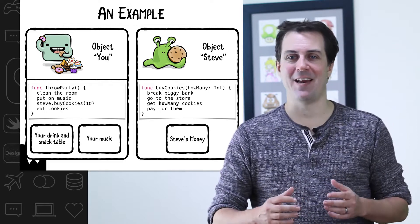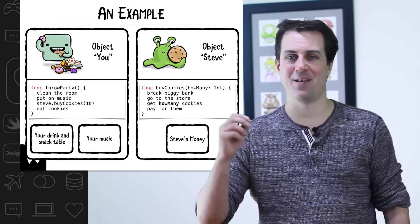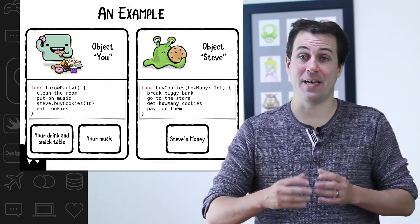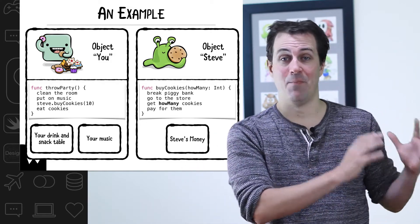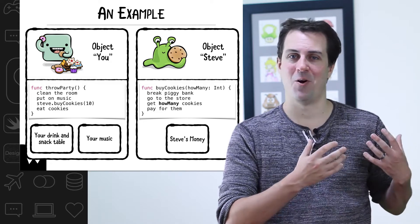The Steve object also has some data. He has a wallet with some money in it. He goes to the store and he exchanges that money data for another important piece of data, cookies. He brings those cookies back to your object and you place them on the cookie table.